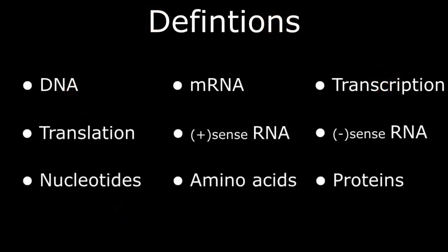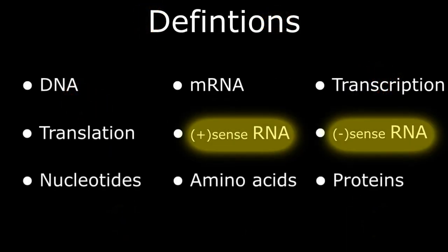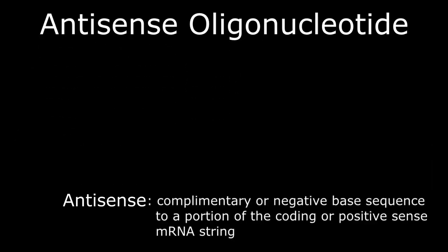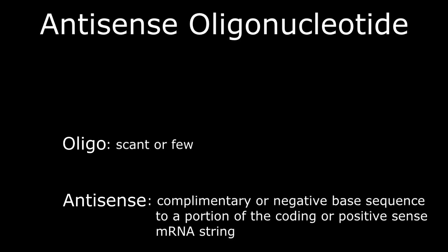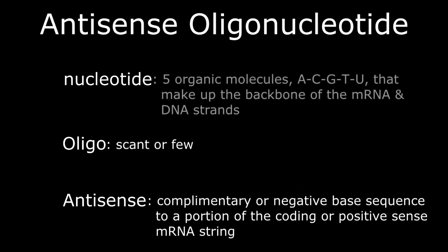From this example, we have defined both positive and negative-sense messenger RNA. Now we can talk about the antisense oligonucleotide, or ASO. The moniker ASO is descriptive: anti-sense is basically the complementary sequence to a portion of the encoding or positive-sense messenger RNA string. Oligo means scant or few. And of course, the nucleotides are the five organic molecules — A, C, G, T, and U — that make up the backbones of the mRNA and DNA strands.